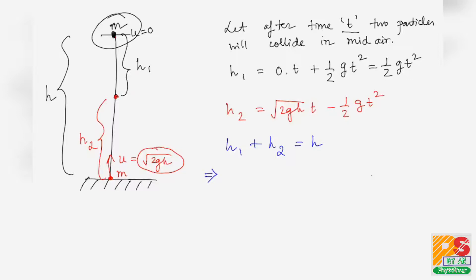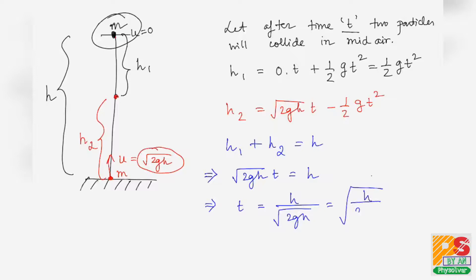The ½gt² terms cancel out, giving √(2gh)·t = h. Therefore the time of collision is t = h/√(2gh) = √(h/2g). After this time √(h/2g), the two particles will collide.